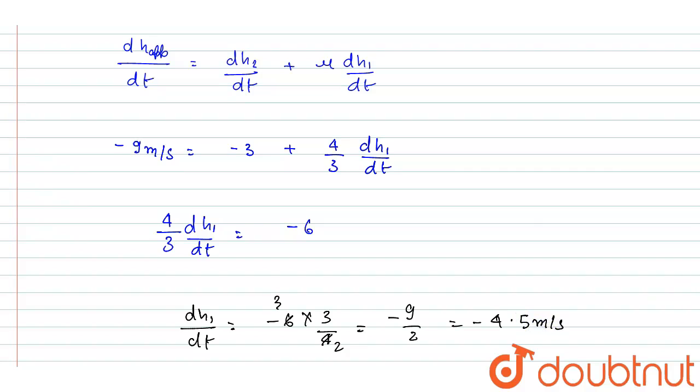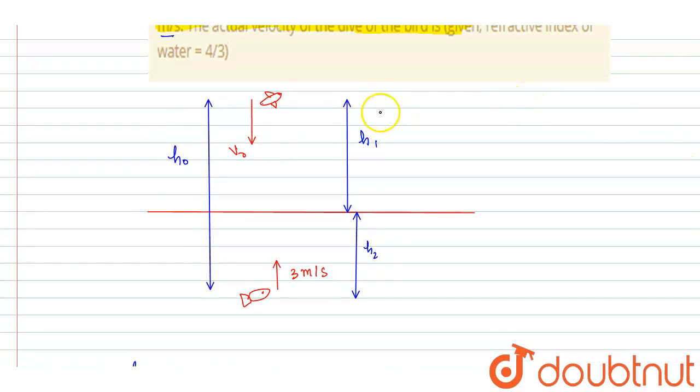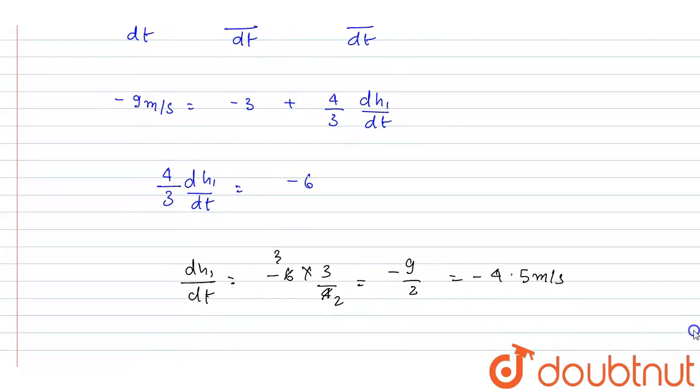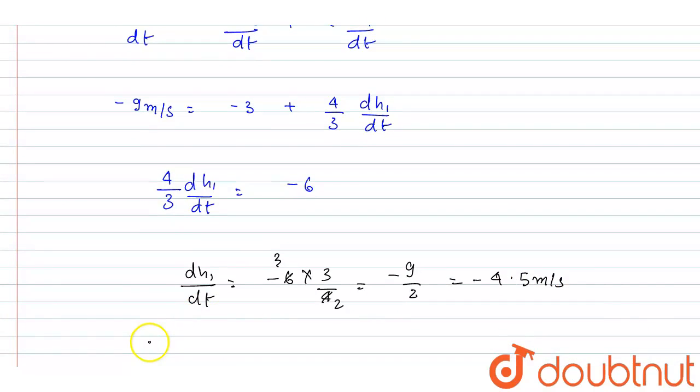This height is decreasing with a rate of 4.5 meters per second. So velocity of the bird with respect to the ground, it will be 4.5 meters per second in downward direction.